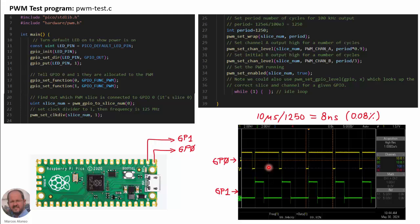Here we have the outputs on the oscilloscope. GP0 shows a duty cycle of 0.9, and GP1 shows a duty cycle of one third. The measurement for channel one confirms 100 kHz and 90% duty cycle. In the 10-microsecond period we have 1250 steps to change the duty cycle, so each unit is 8 nanoseconds — representing 0.08% resolution, which is very good accuracy for generating the duty cycle.